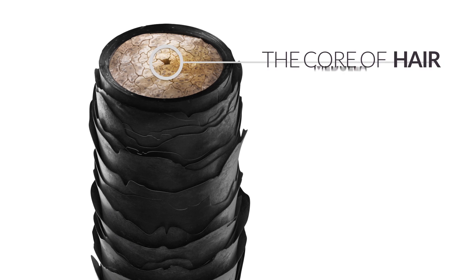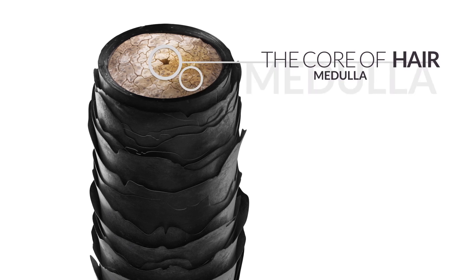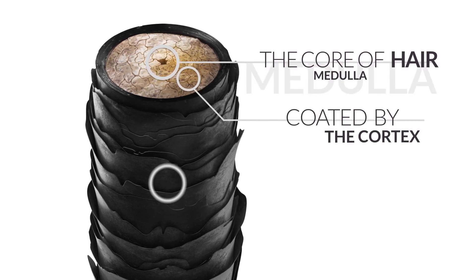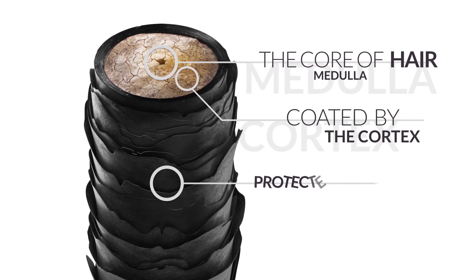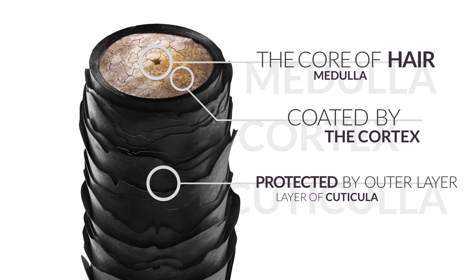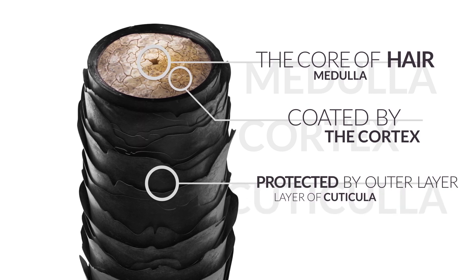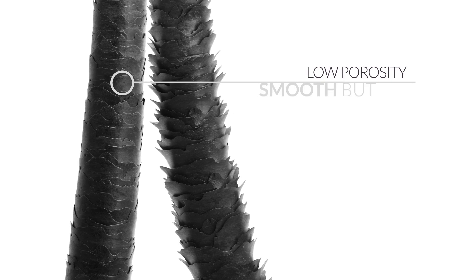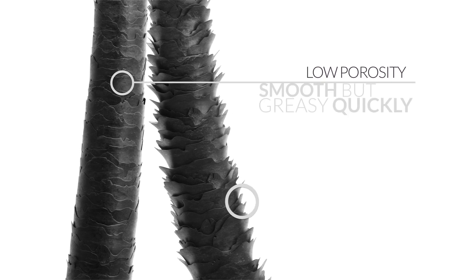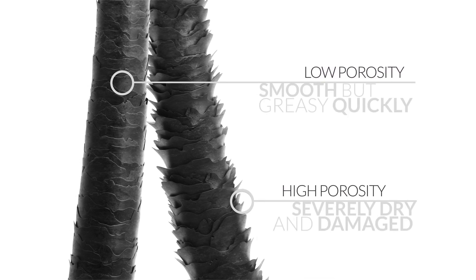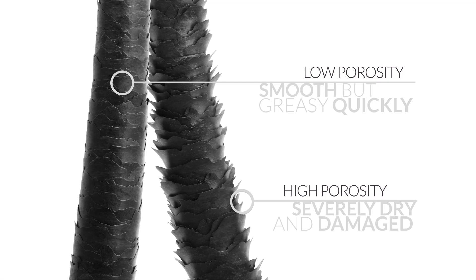Anatomically speaking, hair is made of layers. The core of hair, the medulla, is coated by the cortex, which is protected by the outer layer of cuticles, the cuticula. To what extent the fibers of the cuticle are lifted is called hair porosity. The more lifted the cuticles, the more damaged the hair and the higher its porosity.